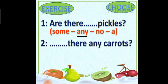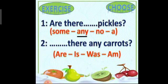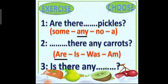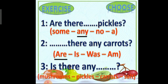Number two: blank there any carrots? Look at the noun. Carrots is a countable noun and plural, so the right answer is are. Are there any carrots? Number three: is there any mushrooms, pickles, carrots, salt? As we know, is comes with uncountable nouns.